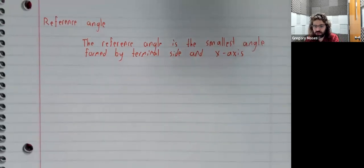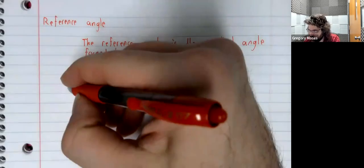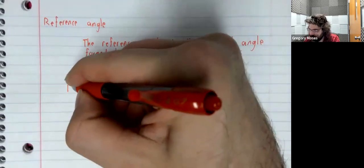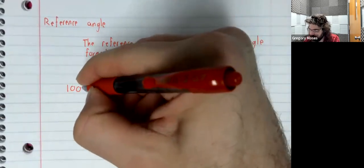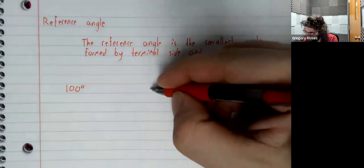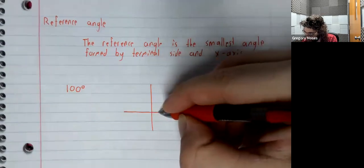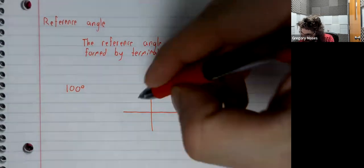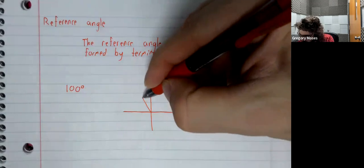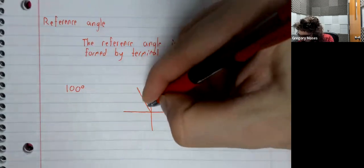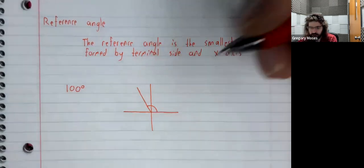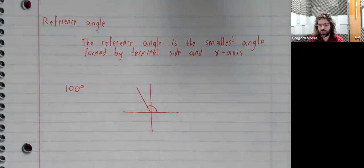Suppose we have an angle of 100 degrees. 100 degrees is a little more than 90 degrees. An angle of 100 degrees looks something like that.